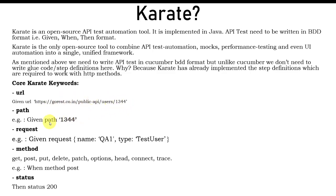Next is the path keyword. If you want different parts for the path for different URLs, you can define that using 'Given path'. In practical automation scripts, we typically define the base URL in the background and pass individual paths using this keyword.